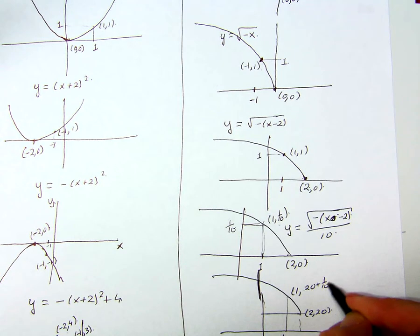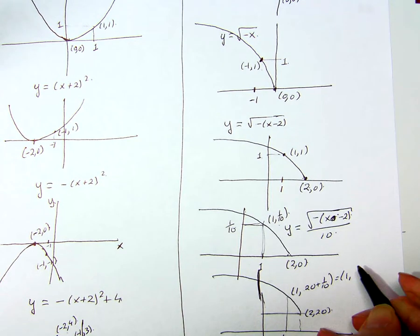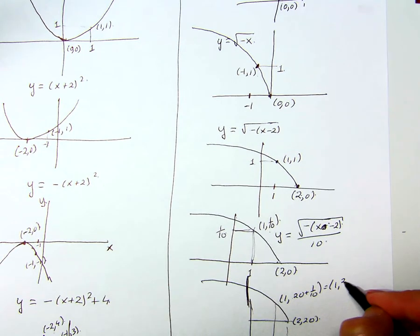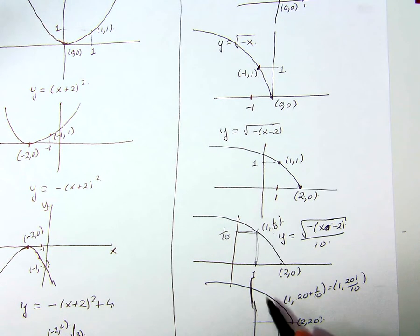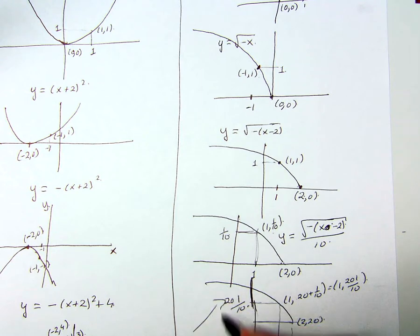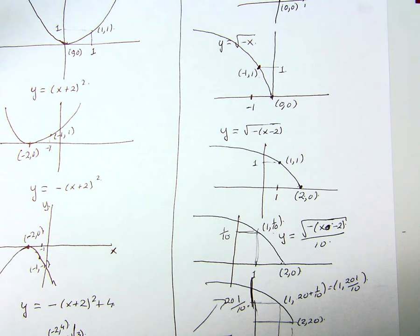And the point one one over ten is going to shift upwards to the point one twenty plus one over ten, which is the point one two hundred and one over ten. And so it's up there. So finally that's the graph of y equals the square root of negative x minus two over ten plus 20.